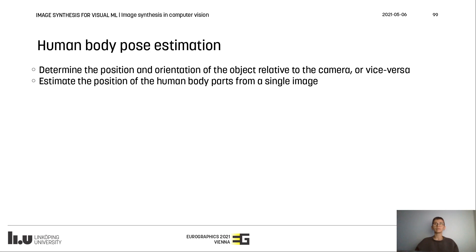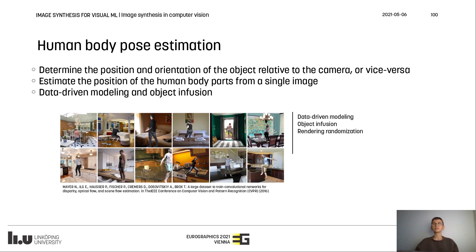Finally, human body or articulated pose estimation is an important problem within general pose estimation, where the configuration of a human body is estimated from a single image. For this task, synthetic data generation frameworks are typically based on data-driven modeling methods and employ object infusion techniques. They also usually use rendering randomization along with randomly assembled texture maps and background pictures to induce data diversity and higher complexity. Representative examples use data-driven modeling in an object infusion framework, along with rendering randomization.